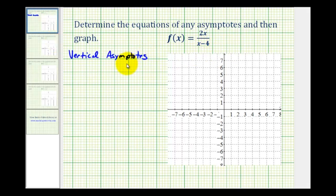The vertical asymptotes occur at the zeros of the denominator as long as they're not also zeros of the numerator. So if we set x minus four equal to zero, we can determine the equation of the vertical asymptote. If we add four to both sides, we have x equals four, which is the equation of our vertical asymptote. Let's go ahead and sketch that.